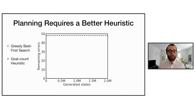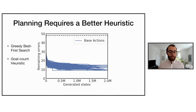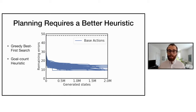If we just do greedy best first search with the goal count heuristic and the built-in domain actions, we're never able to solve the Rubik's Cube within 2 million states, and the number of errors remaining has essentially plateaued at around 9 to 15 by the end of the planning budget.